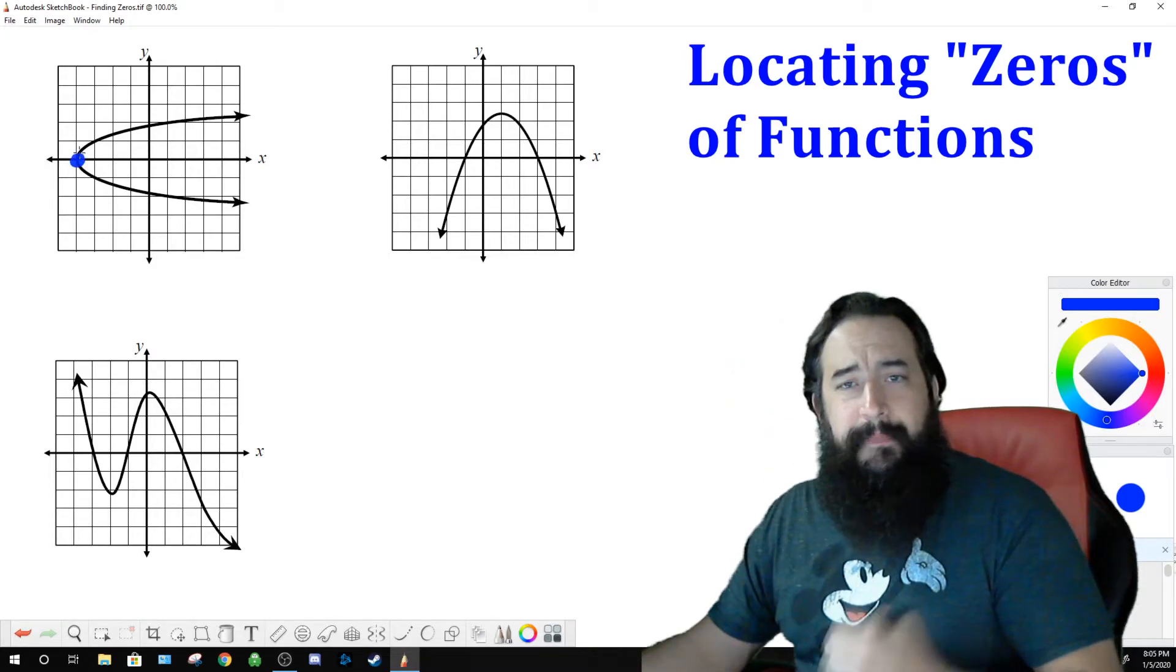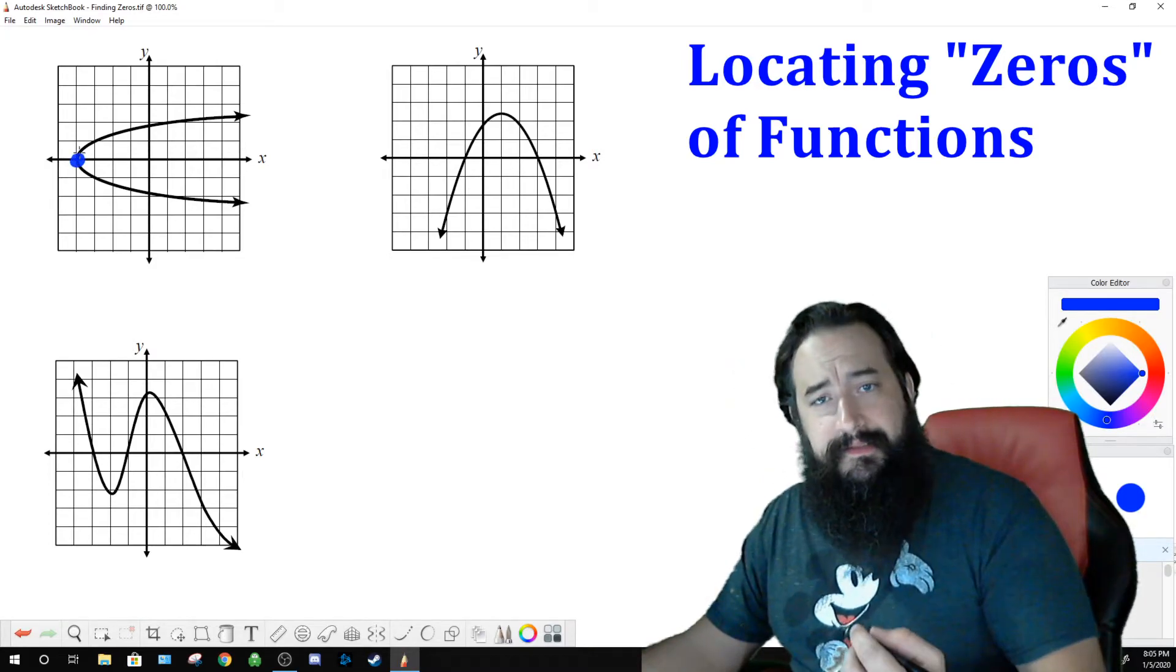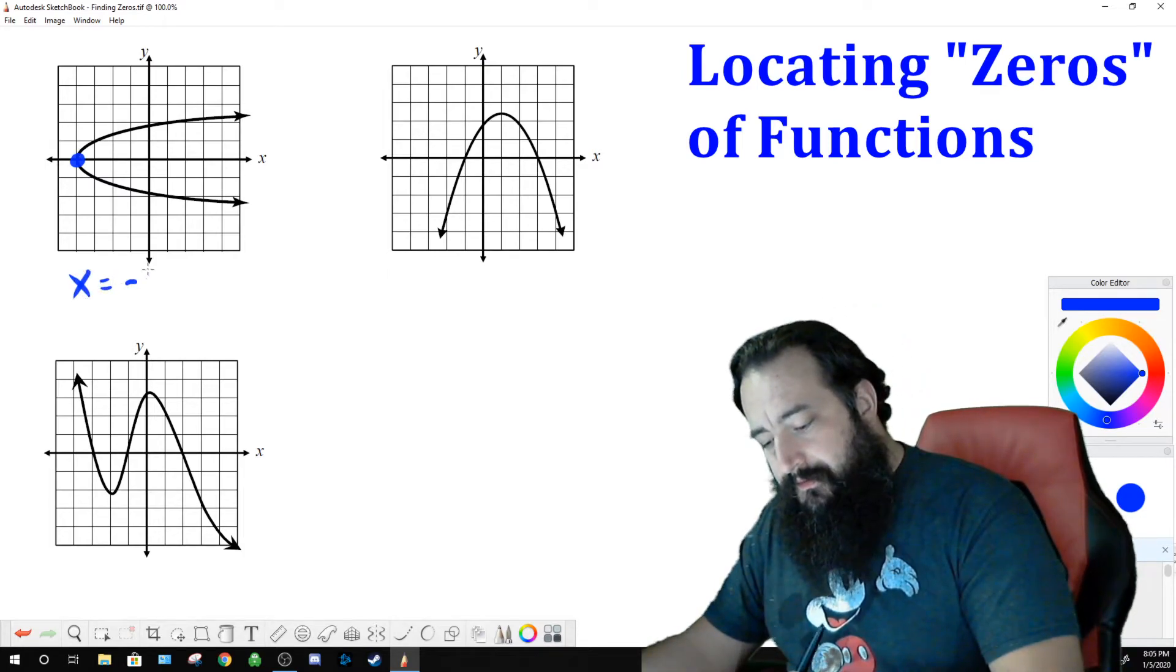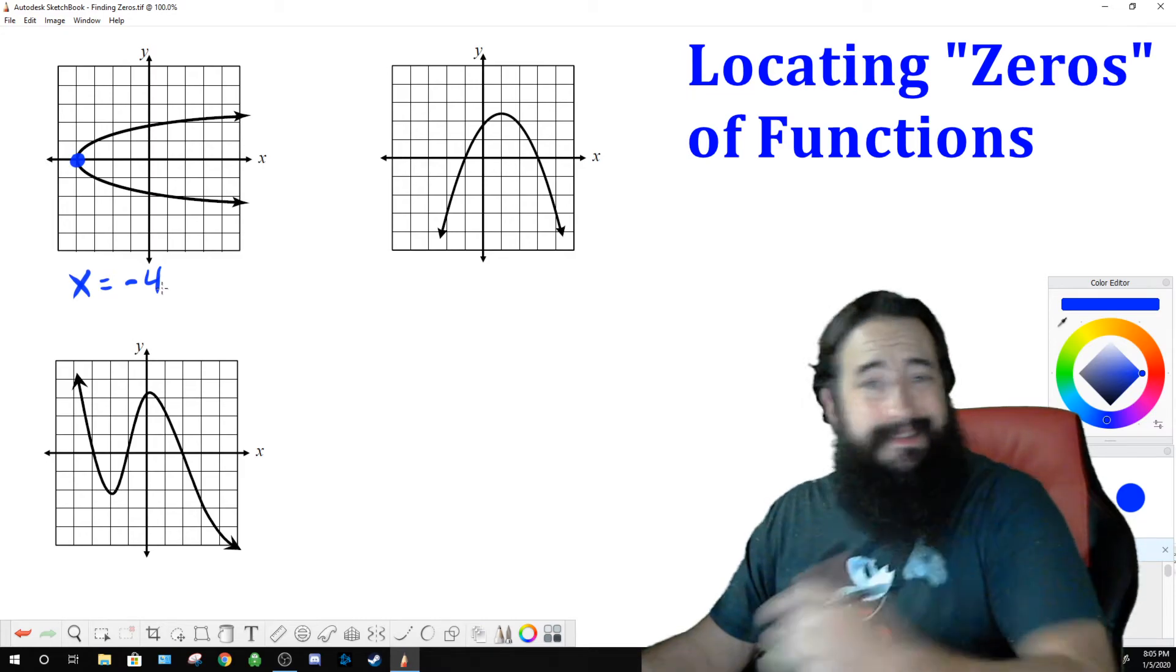So what's that point? That's the point negative four, zero. So the zero is located at x is equal to negative four. Simple as that.